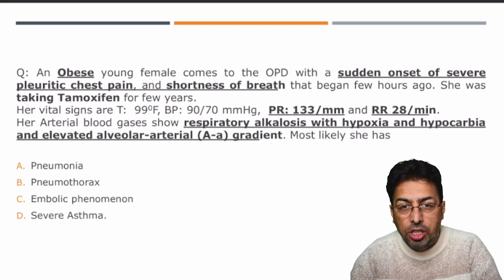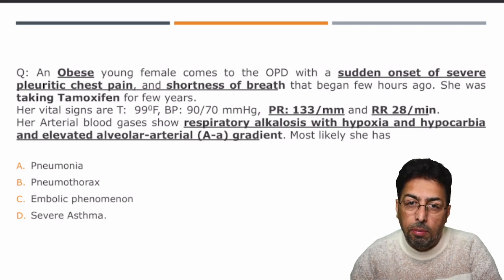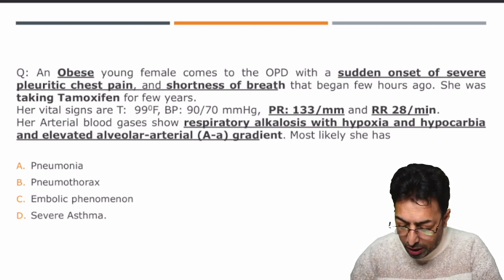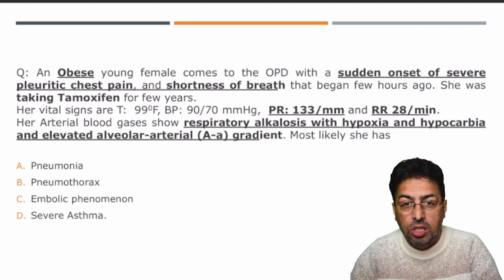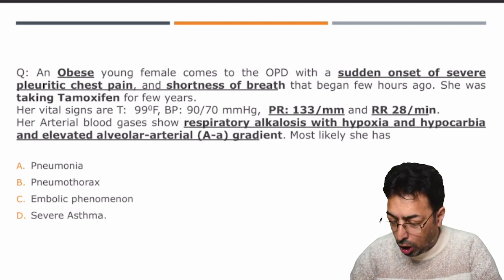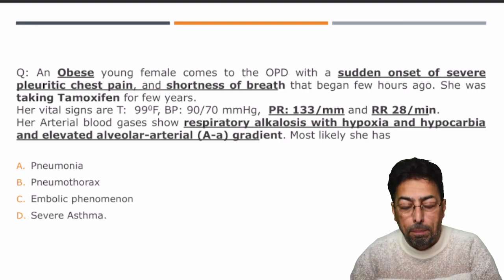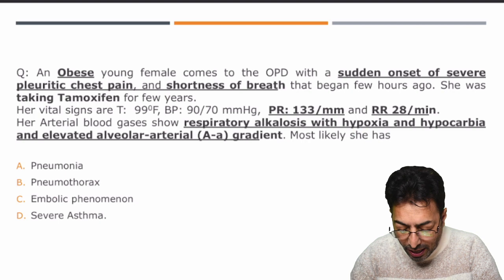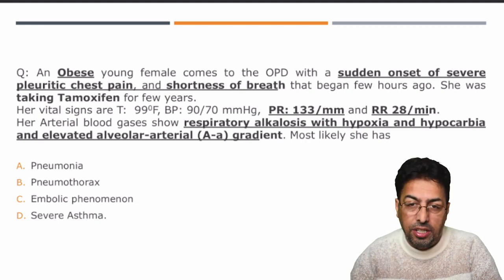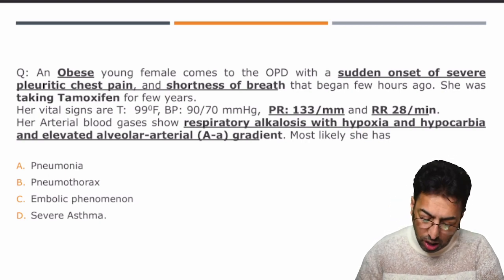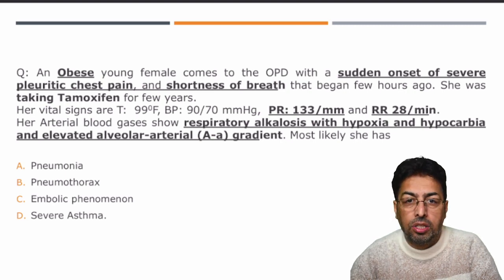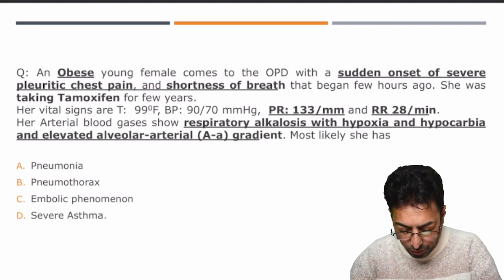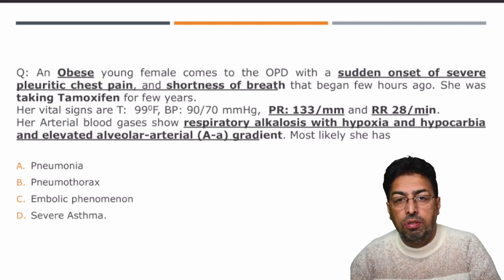In addition, there is a lab value given: respiratory alkalosis is seen on the ABG with hypoxia and hypocarbia and elevated alveolar-arterial gradient. The answer options are pneumonia, pneumothorax, embolic phenomena, and severe asthma.